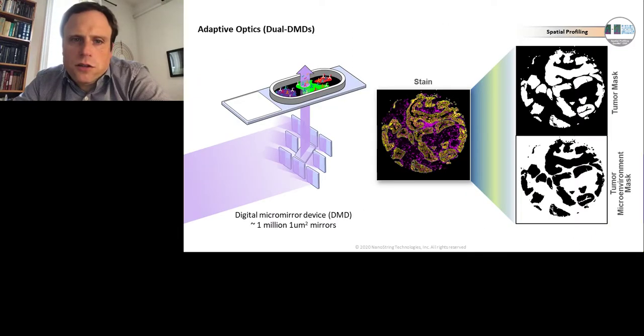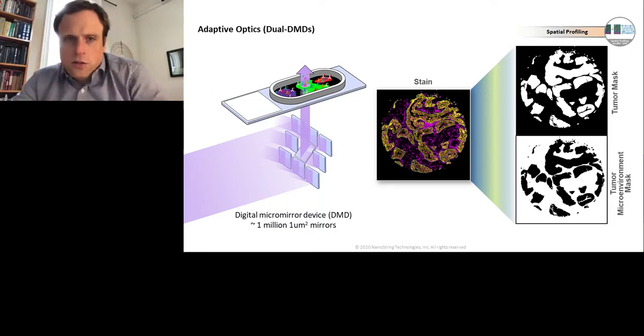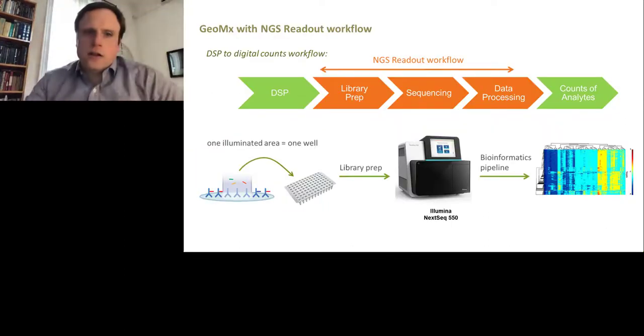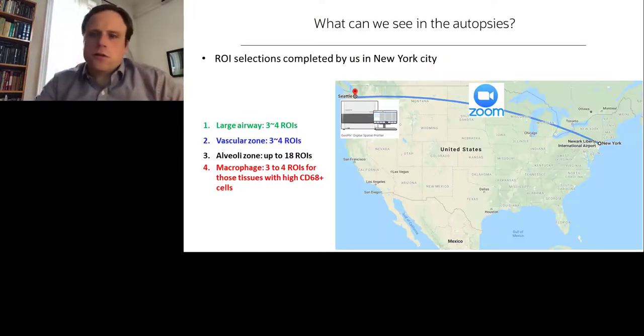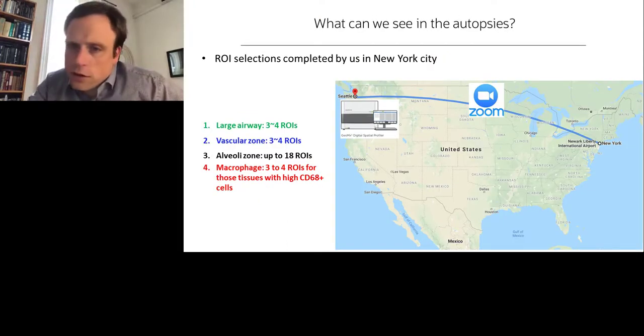So for example, what you can do is use these, basically, it's a digital micromirror device. If anyone used the old NimbleGen arrays, it was a similar instrument that could do very small micromirrors to build microarrays. You can do the same technology to actually look at a stain, and then actually pull it out and look at what's present in a tumor, or it could be, for example, a COVID autopsy. So that's actually what we did here, is we actually took the DSP, the library prep sequence on our NextSeq 500, and did the counts of analytes to characterize what was present. This was done in tight collaboration with Rob Schwartz and Alan Bojic, two members of pathology faculty here at Cornell. And we collaborated with a pathologist to say, okay, well, let's think of the regions of interest from a large airway, vascular zone and alveolar zone, and also look for macrophages in these regions of interest, those that had high CD68 cells.